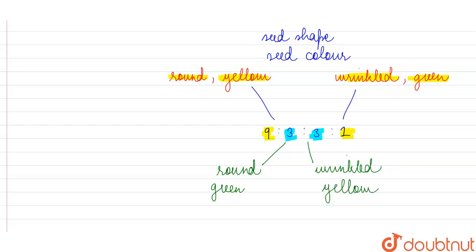So such a recombination, generation of combinations which was not there in the parents also. This is possible because of independent assortment,